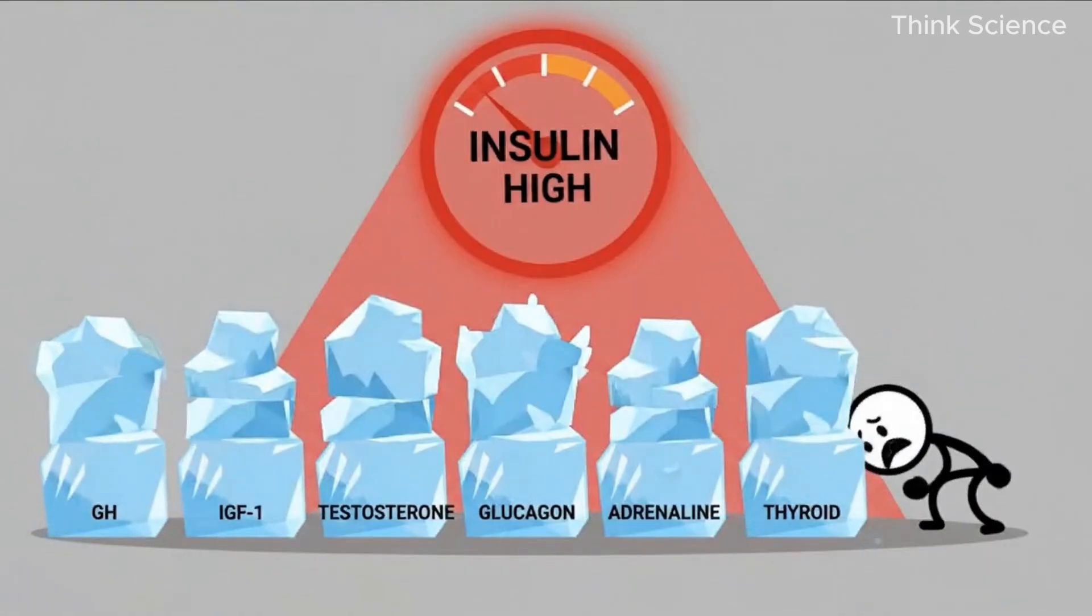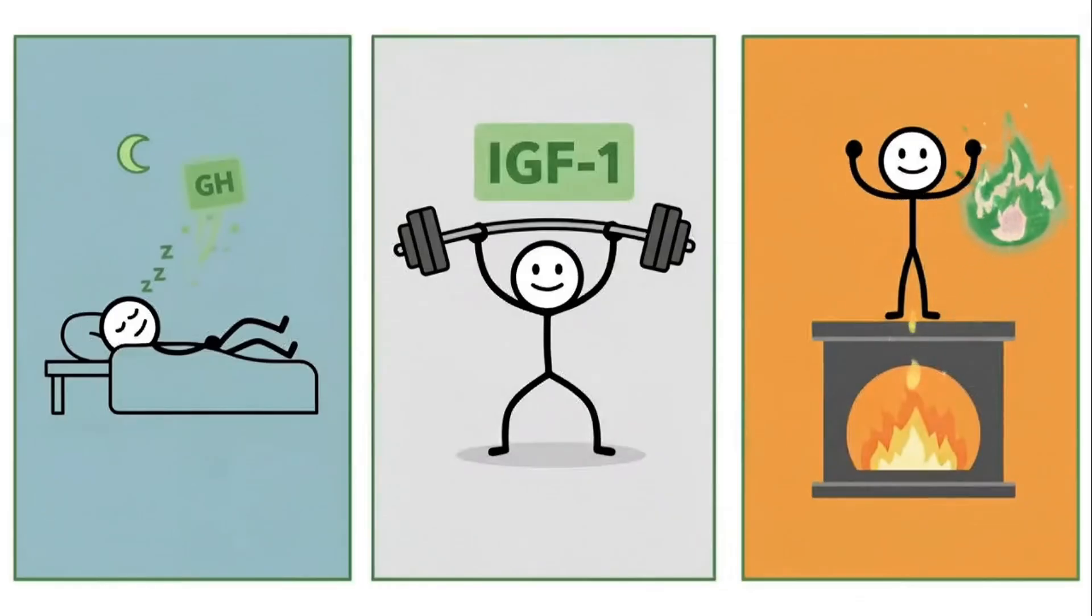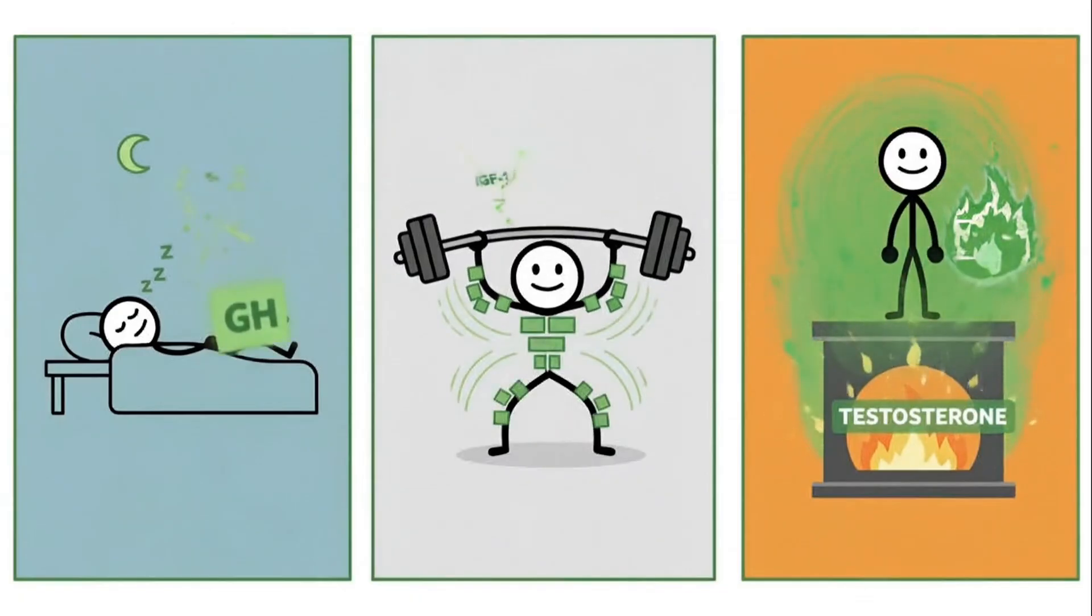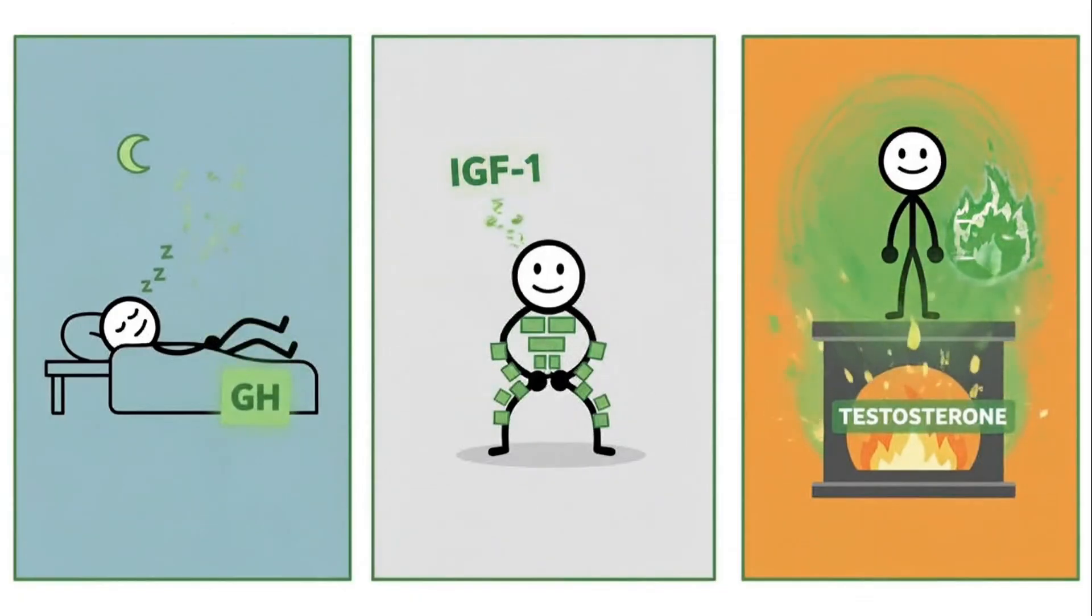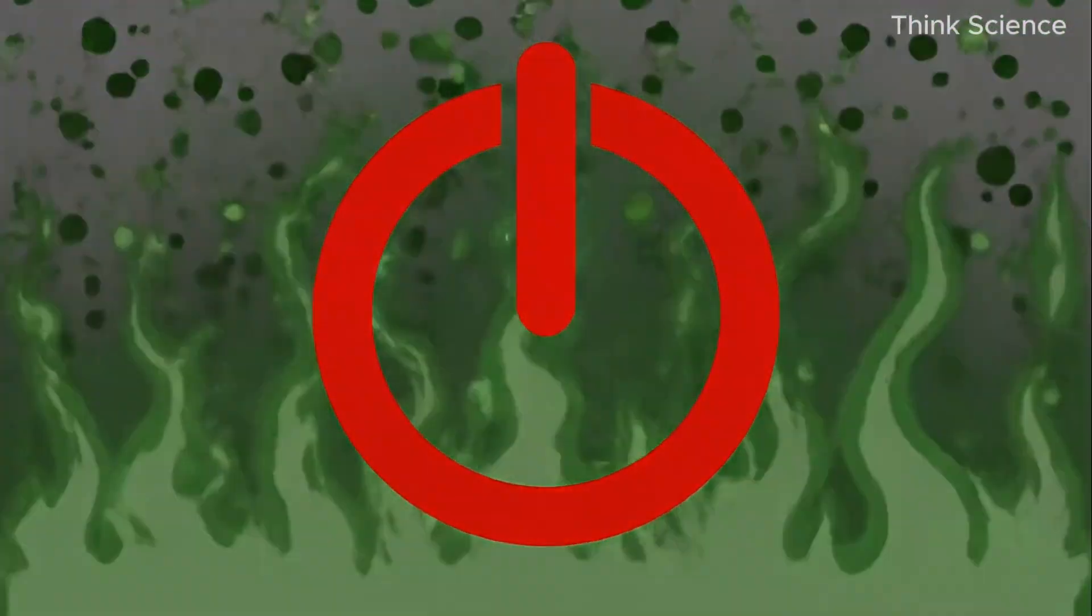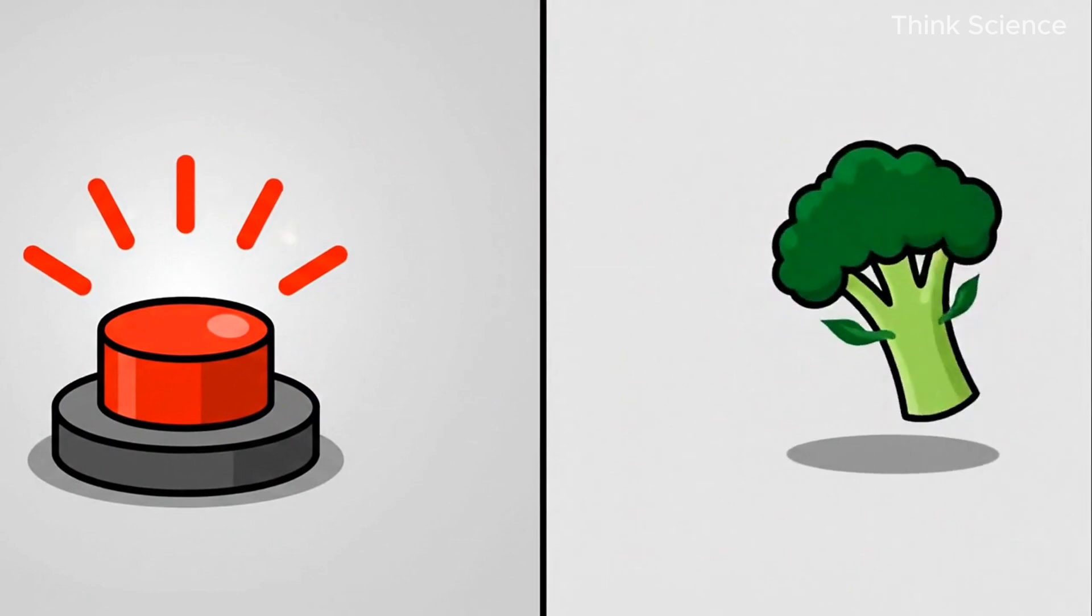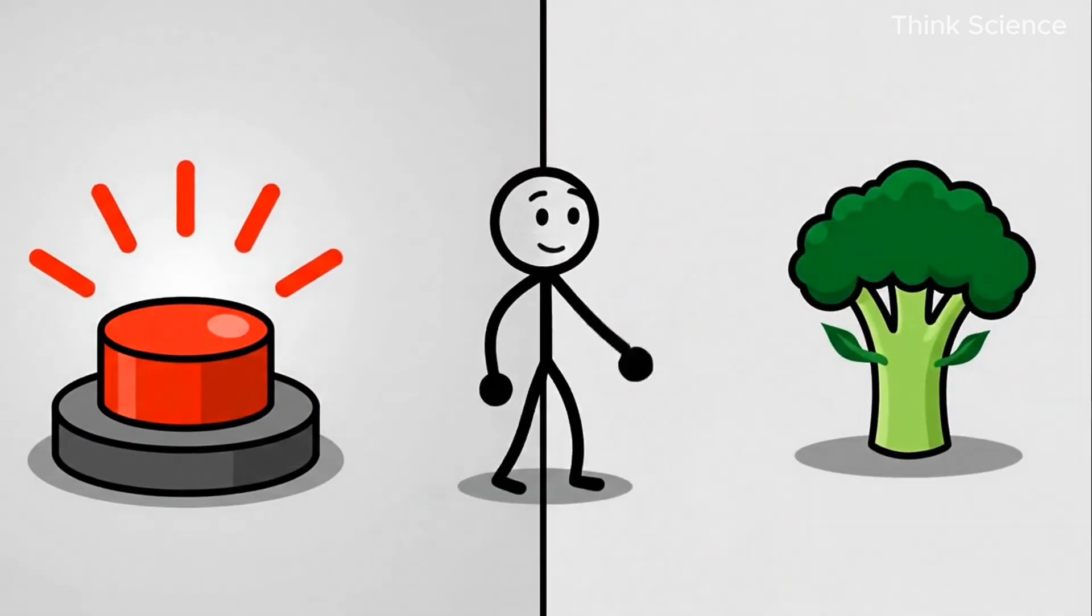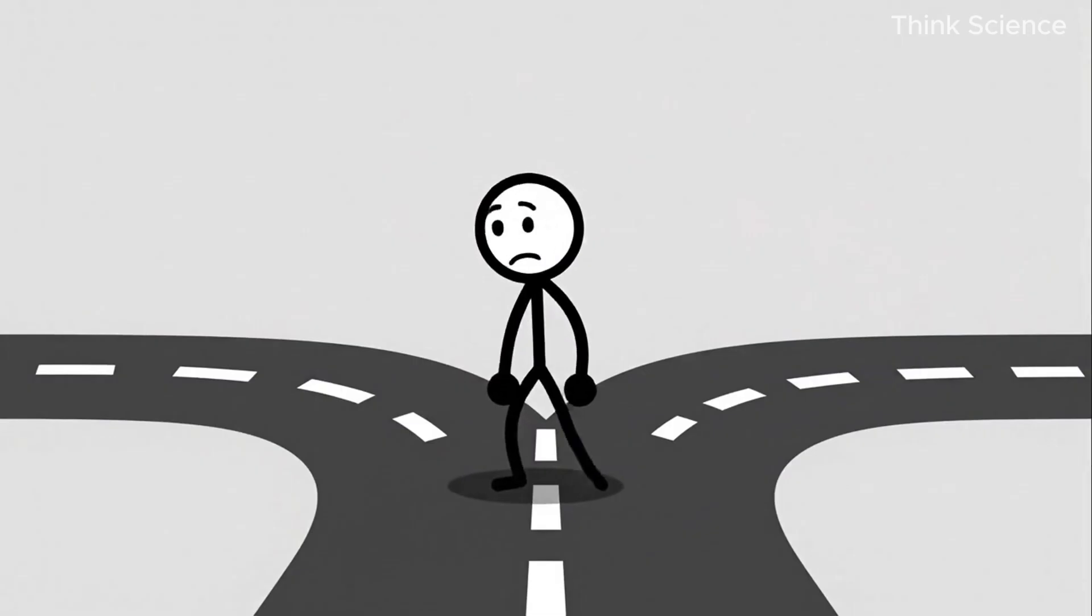Growth hormone rises during fasting, deep sleep, and intense exercise. IGF-1 supports muscle building and fat burning. Testosterone keeps metabolism strong. But again, insulin can shut them all off. And this is why controlling insulin is the foundation of fat loss. So how do we lower it? That's where the real strategy begins.